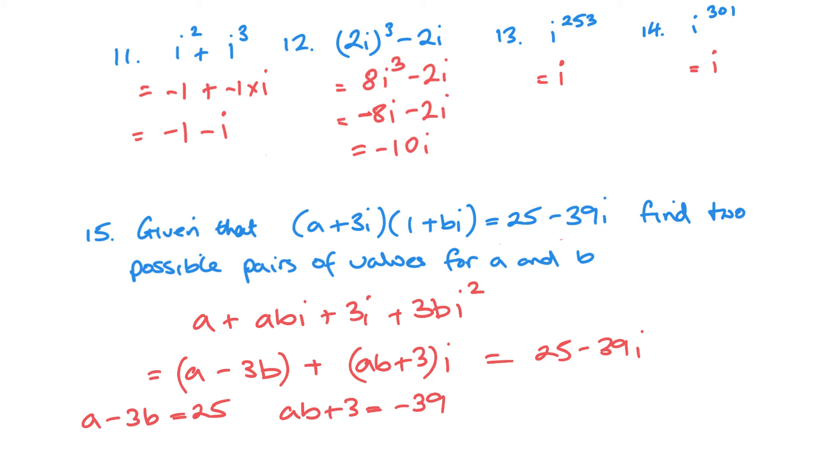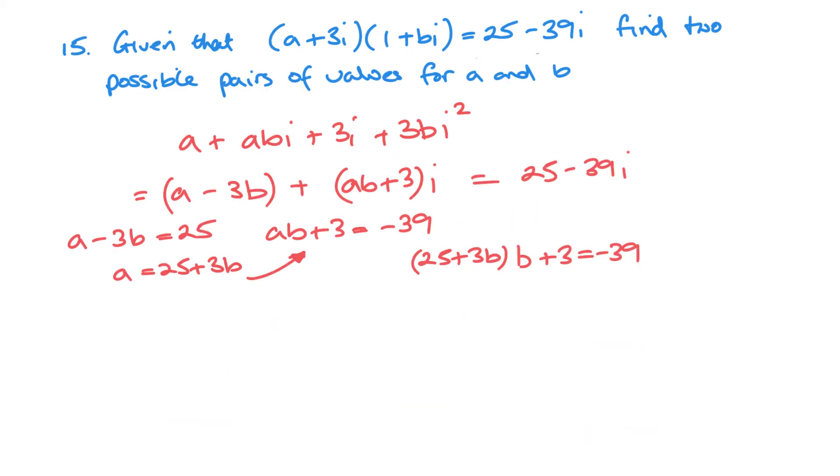So it should be quite straightforward. Now, I would rearrange this one: a equals 25 plus 3b and substitute it into here. So we'd end up with 25 plus 3b multiplied by b plus 3 equals negative 39. Just making a bit more room there. So it's just a matter of expanding the brackets. Take everything to one side.